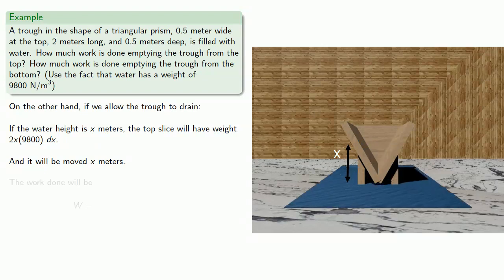The work done will be force 2x times 9,800 dx times distance x. Again, we're going to sum these bits of work done between a height of 0 and a height of 0.5 meters. We'll use integration by parts to get the result.